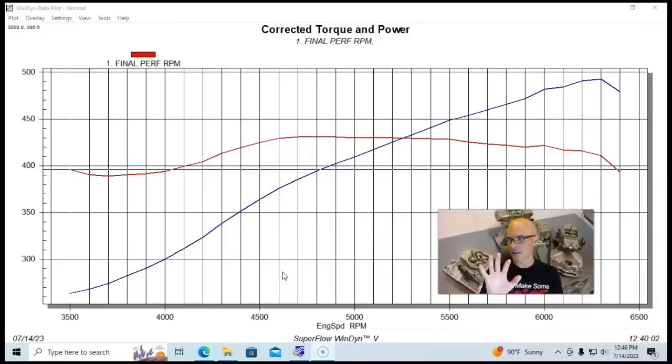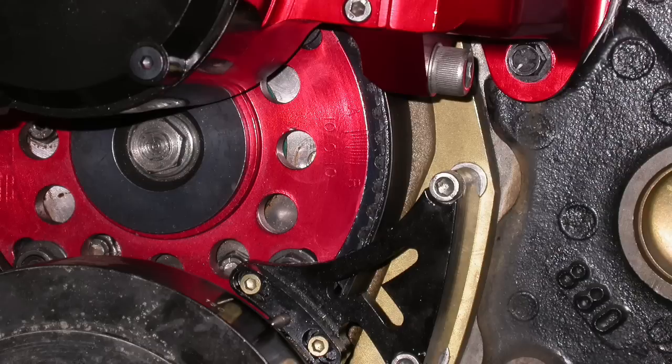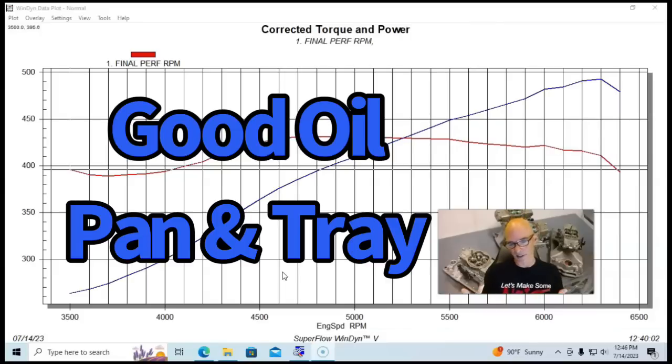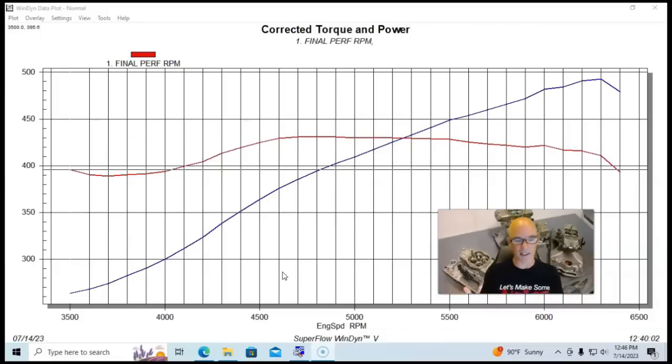I'll put a photo up here of the timing setup. Normally we use a double roller timing chain, but this had a cam belt, an adjustable one, so we could externally adjust the cam timing, which was fairly cool. This thing had a lot of good stuff on it and was a perfect little hot test motor to test all of these different intake manifolds.